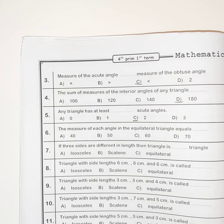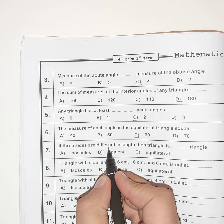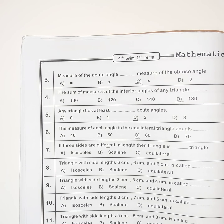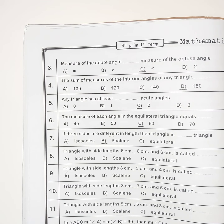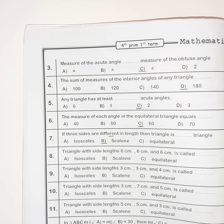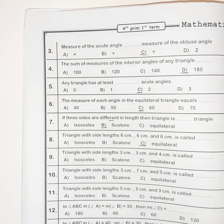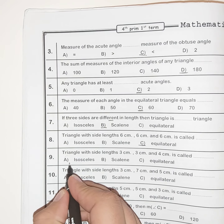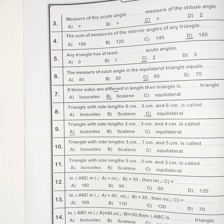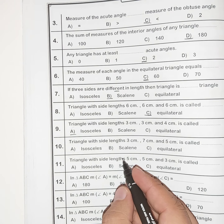Number seven: the measure of each angle in an equilateral triangle equals 60 degrees. If three sides are different in length, the triangle is called a scalene triangle. Number eight: a triangle with side lengths 6 cm, 6 cm, and 6 cm is called an equilateral triangle. Number ten: a triangle with side lengths 3 cm, 7 cm, and 5 cm is called a scalene triangle.